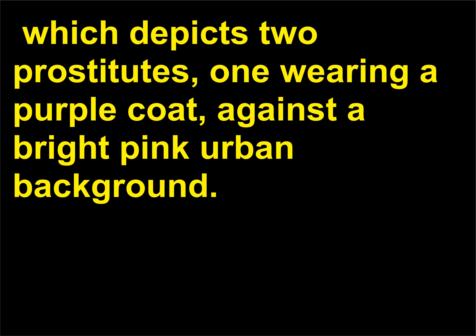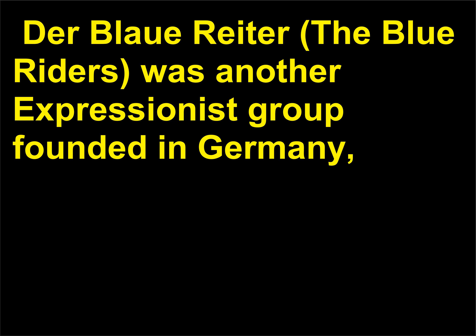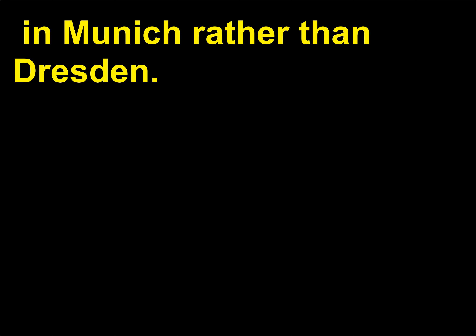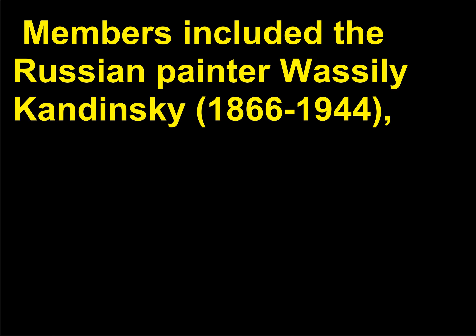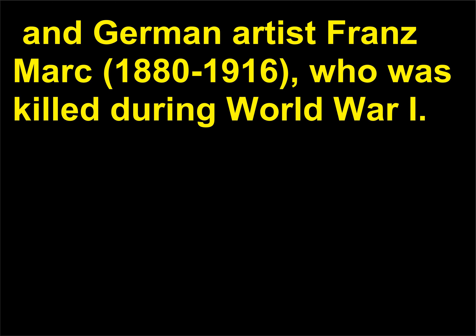Kirchner's Street, Berlin depicts two prostitutes, one wearing a purple coat, against a bright pink urban background. Der Blaue Reiter (the Blue Riders) was another Expressionist group founded in Germany, in Munich rather than Dresden. Members included the Russian painter Vasily Kandinsky (1866–1944) and German artist Franz Marc (1880–1916), who was killed during World War I.